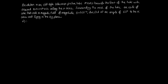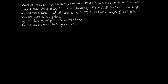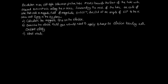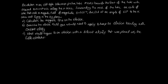Part A: calculate the magnetic force on the electron. Part B: describe the electric field you would need to apply to keep the electron traveling with constant velocity. Part C: what would happen to an electron with a different velocity placed into the electric field established in B, and what would be an application of this?